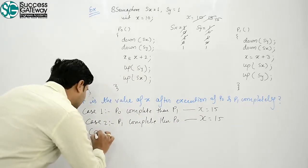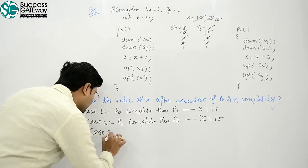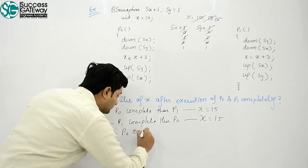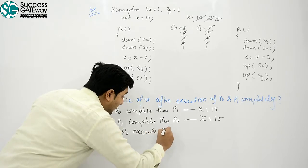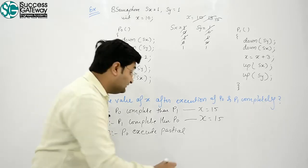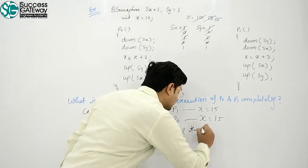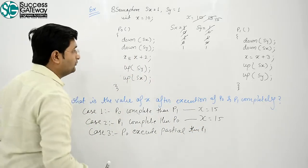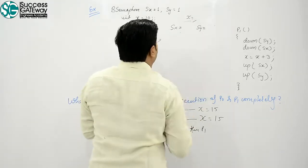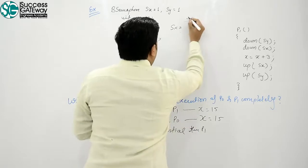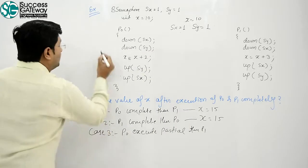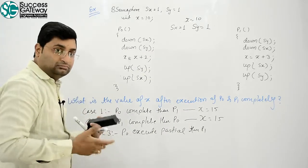Interesting case is case 3. P0 executes partially, but then P1... again conditions. X equals 10, Sx equals 1, Sy equals 1.